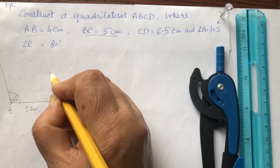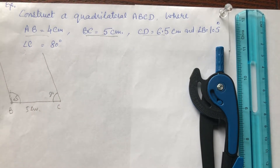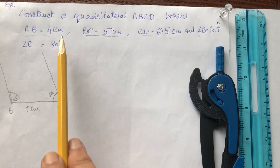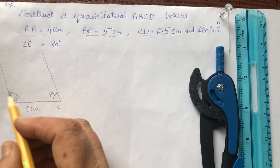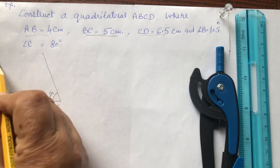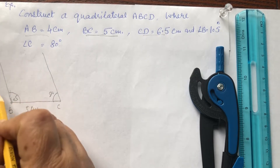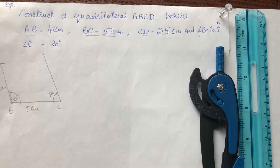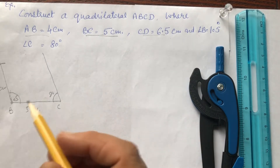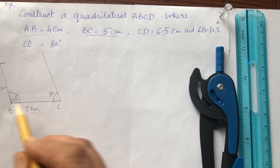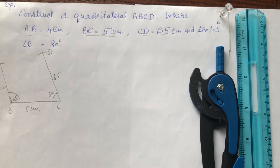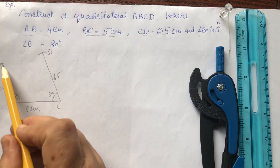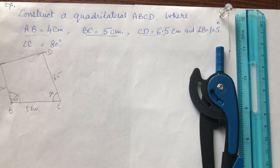Now 80 degrees — it is less than 90, so it will come inside. Make this angle 80 degrees at C. AB is equal to 4 cm, so point A will come here — cut 4 cm. CD is equal to 6.5 cm. This will be the D point; join these two points and this will be the quadrilateral.